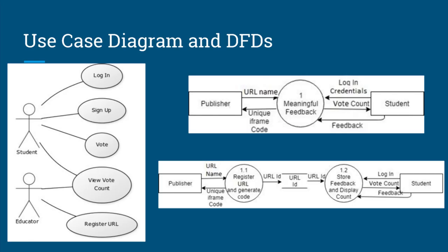Here we can see the use case diagram. A student is able to log in, sign up, vote, or view the vote count, whereas an educator is able to register their URL and view the vote count for their tutorial. The first figure on the right is the context level DFD — level 0 — which gives the bird's eye view of the application. A publisher enters the URL name into the application, the application generates a unique iframe code for that publisher, and then a student can enter login credentials, give feedback on the tutorial, and the vote count is returned.